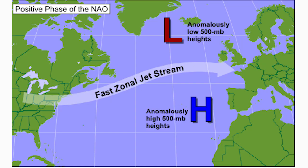Moving on, this is showing what the positive phase of the NAO looks like. Comparatively, a positive NAO features anomalously low 500-millibar heights over Iceland — basically lower pressure than normal — and over the Azores we'd see much higher heights than typically expected. This leads to a very fast, zonal jet stream, which is very flat — a lot of what we saw last winter — and results in limited troughing in the eastern United States as well as Europe, which is not good for snowstorms along the east coast.